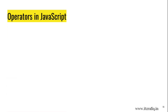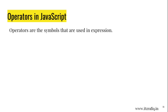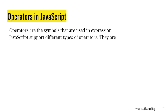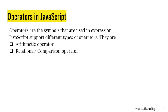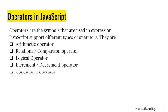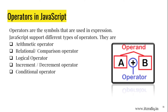Operators in JavaScript: Operators are the symbols used in expressions. JavaScript supports different types of operators: arithmetic operator, relational or comparison operator, logical operator, increment or decrement operator, and conditional operator. In an expression like a + b, a and b are known as operands, and the plus symbol is known as the operator.